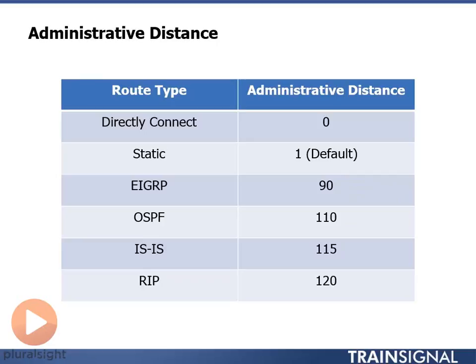But now let's say that in EIGRP we have two paths to network 10.0.0.0/24. How do we choose which route to add to the routing table when there are two paths to the same network? The answer is we use the metric.